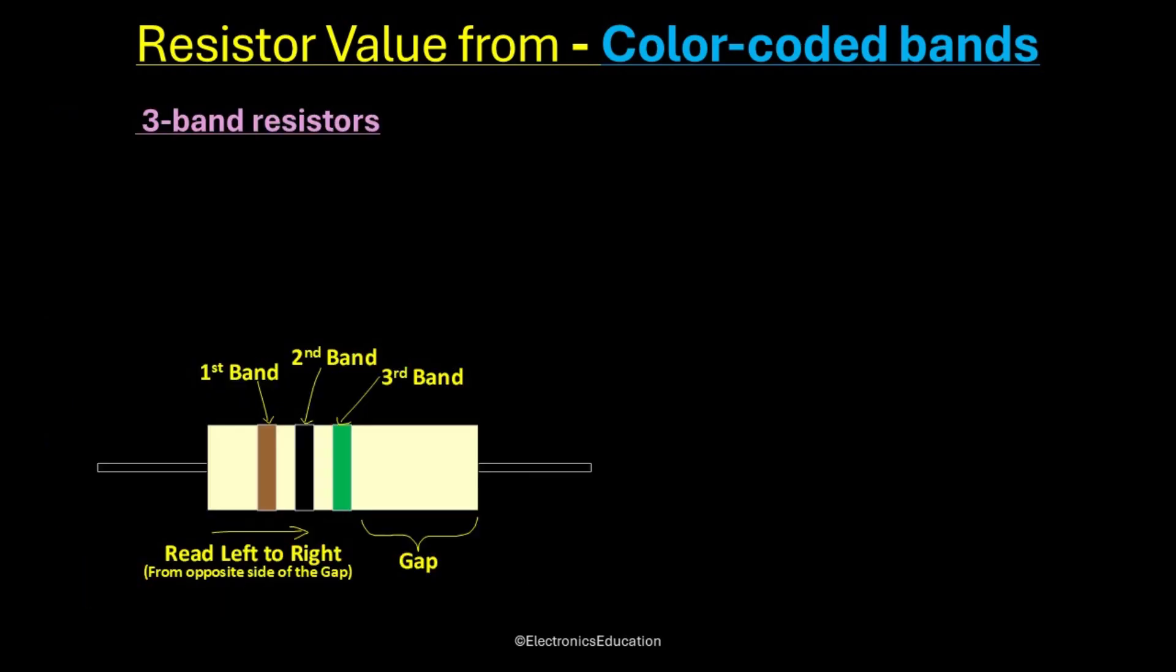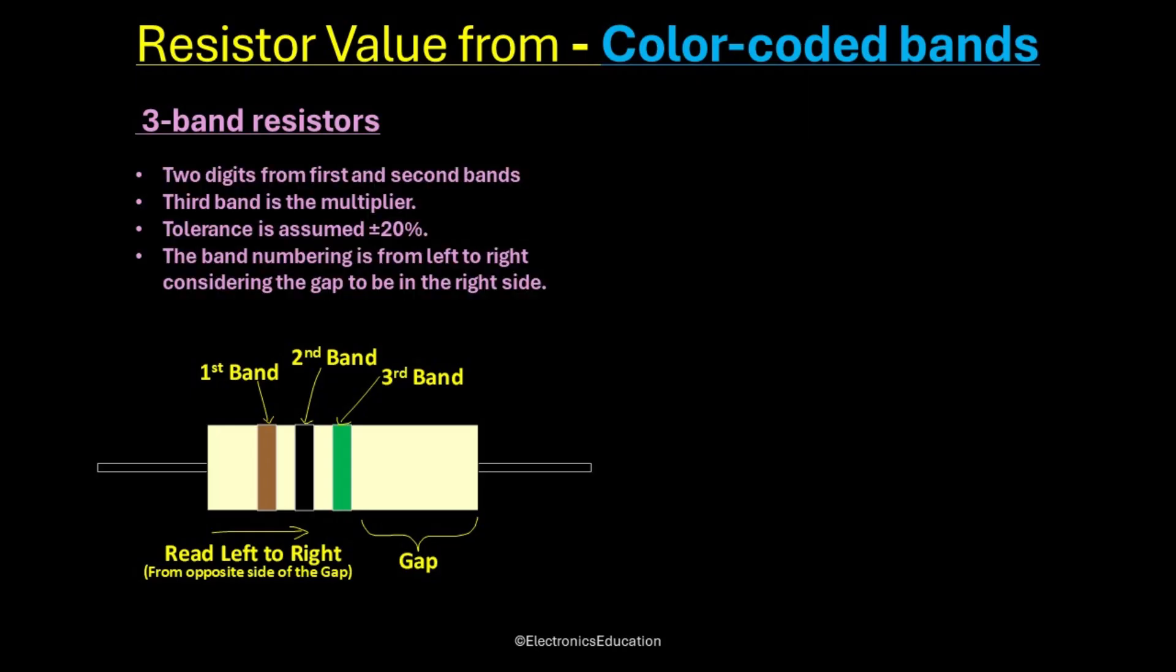So if we take 3-band scheme, we can see there is a group of bands together at one side of the resistor and a large gap without any bands on the other side. These bands are read from the edge of the resistor body, which is opposite side of the gap.